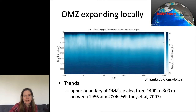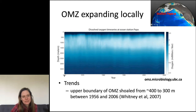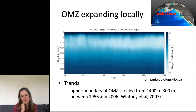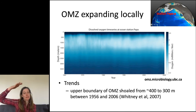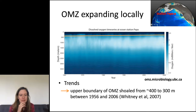Now I'm going to focus on data from Station Papa. Whitney et al., published in 2007, showed that the upper boundary of the oxygen minimum zone shoaled — between 1956 and 2006, over 50 years, it shoaled about 100 meters. That's pretty fast. This is shown as a function of depth and time.